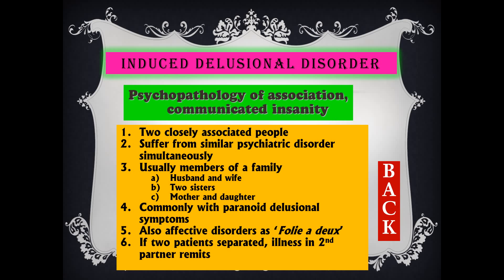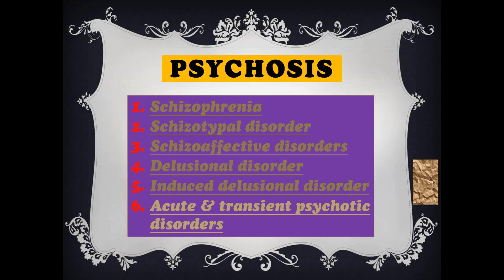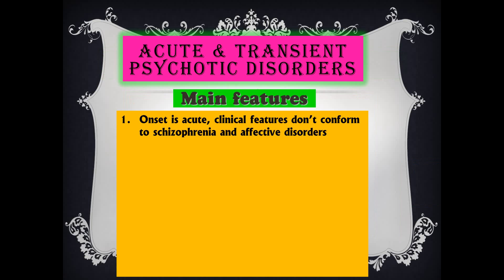Induced delusional disorder — previously called psychopathology of association or communicated insanity — involves two closely associated people (like husband and wife, two sisters, mother and daughter) suffering from similar psychiatric disorders simultaneously, commonly with paranoid delusional symptoms. This is also called folie à deux. If the two patients are separated, the illness in the second partner remits.